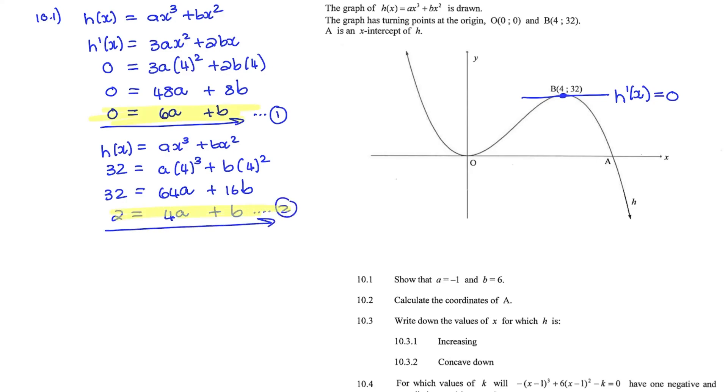So I'll use these two equations to solve A and B simultaneously. But my first equation, I can rewrite as B equals negative 6A by simply transposing the 6A to the left-hand side. And then I can substitute B with negative 6A in my second equation. So then I'll have 2 equals 4A minus 6A, which is now in the place of B.